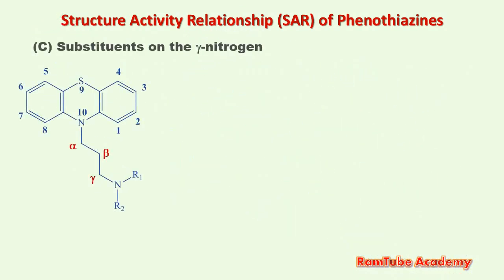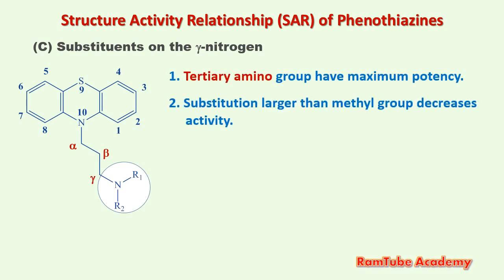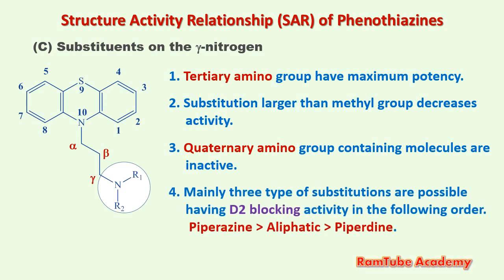The last site for structural modifications is the gamma nitrogen. First: tertiary amino groups have maximum potency. Second: substitution larger than a methyl group decreases activity. Third: quaternary amino group-containing molecules are inactive because quaternary ammonium compounds are positively charged ions that cannot pass through the blood-brain barrier. Fourth: the order of D2-blocking potency is piperazines > aliphatic > piperidine.